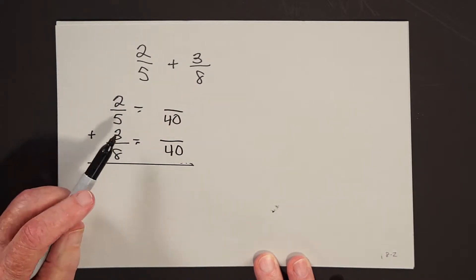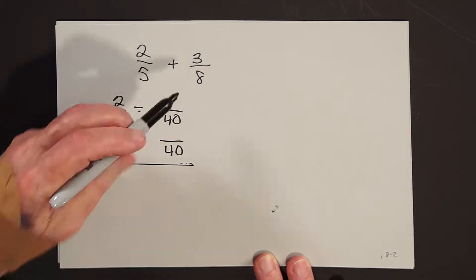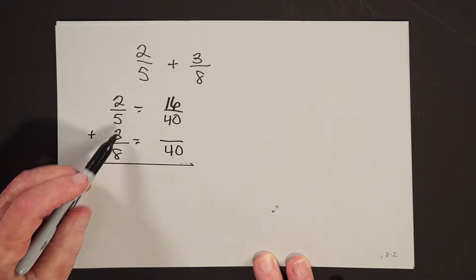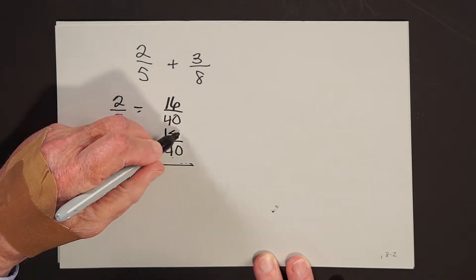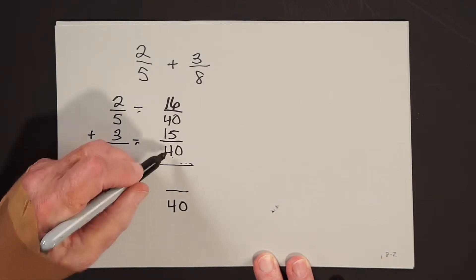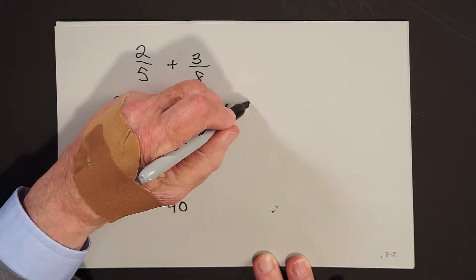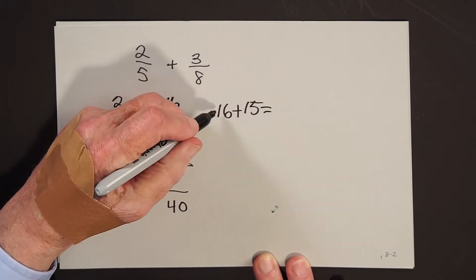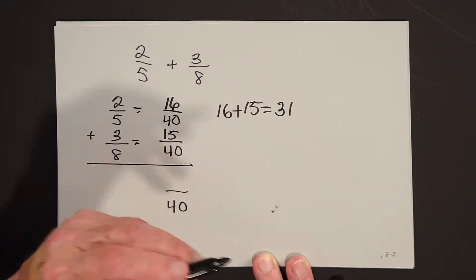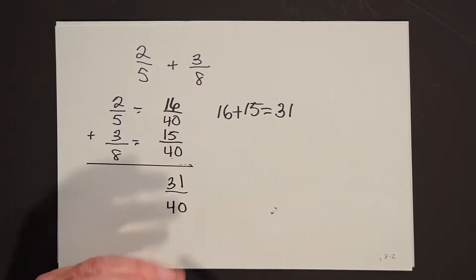And then the mystic rule went on, divide five goes into forty eight times, eight times two is sixteen. Eight goes into forty five times, five times three is fifteen. Now what you do is you keep the common denominator, which is forty, and add the two numerators. And notice that the numerators are whole numbers. Sixteen plus fifteen is thirty-one. You do not have to know fractions to know that sixteen plus fifteen is thirty-one. So the answer is thirty-one-fortieths.